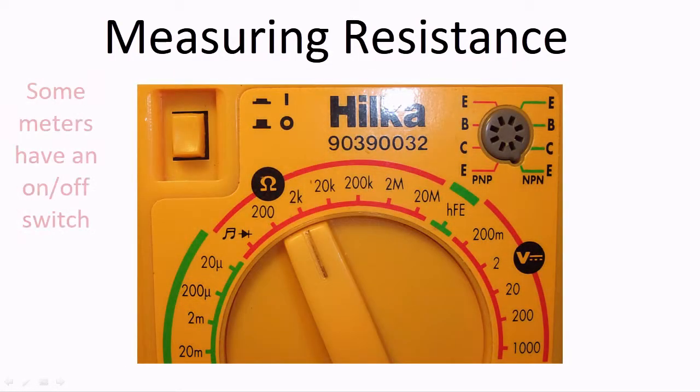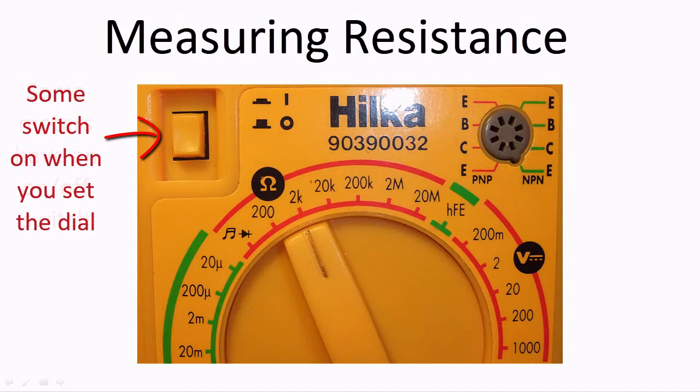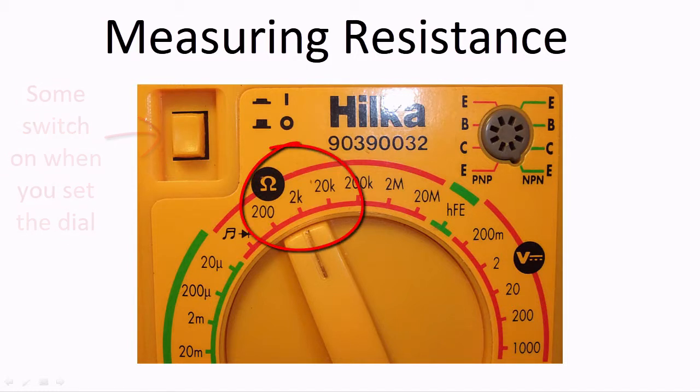Next, set the rotary switch to ohms. I know that the resistor's value is about 470 ohms, so in this case I set the switch to a position that is higher than 470, say 2k, as shown here.